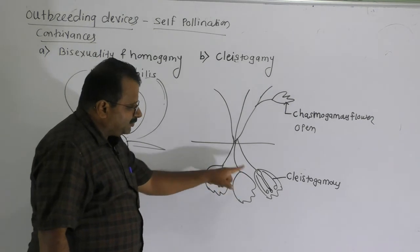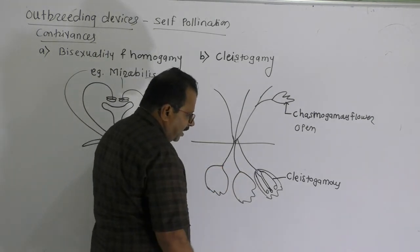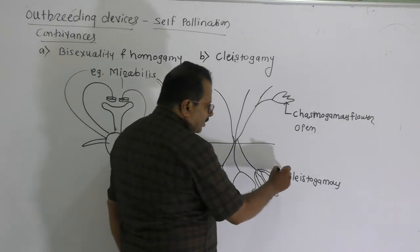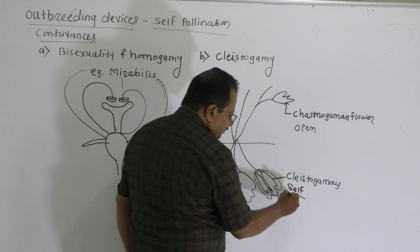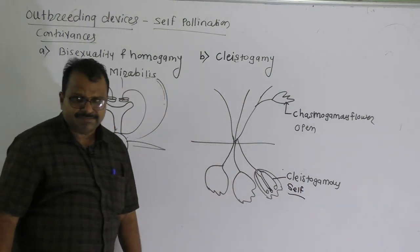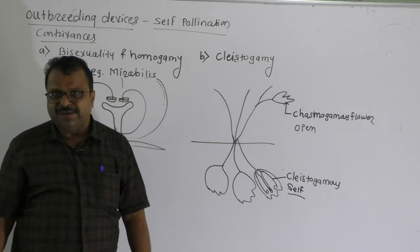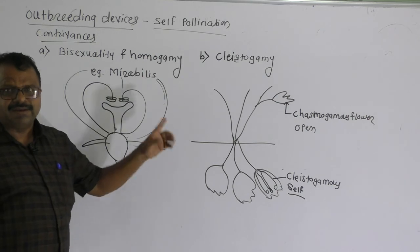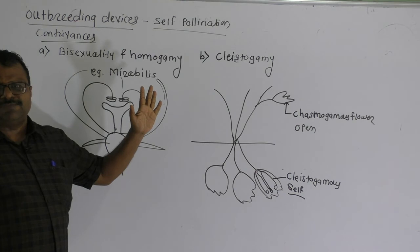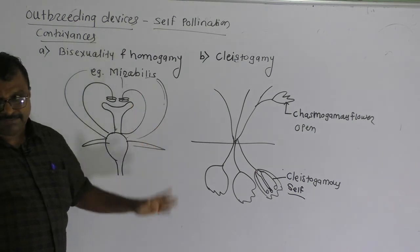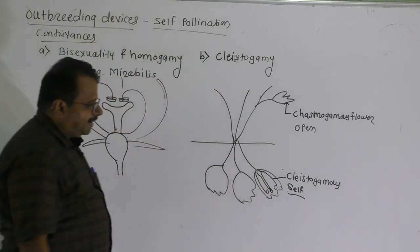Because cleistogamous flowers never open, only self-pollination occurs — cross-pollination cannot happen. So this is the most important modification for achieving self-pollination.